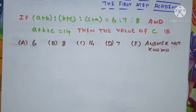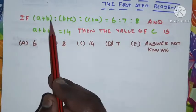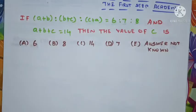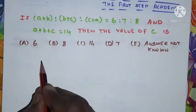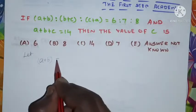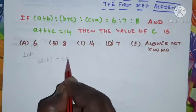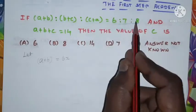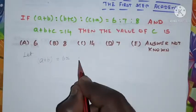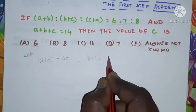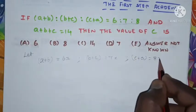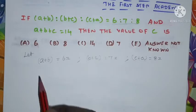They have given us (a+b) is to (b+c) is to (c+a) as 6, 7, and 8. According to the ratio, I have taken a+b = 6x, then b+c = 7x, and c+a = 8x.